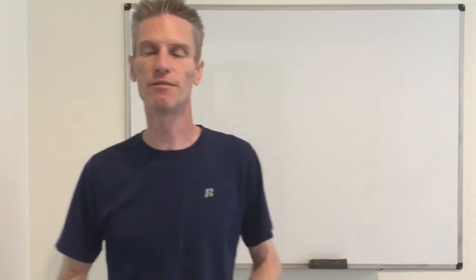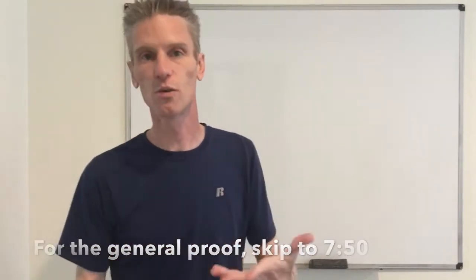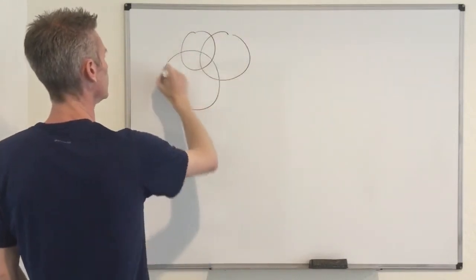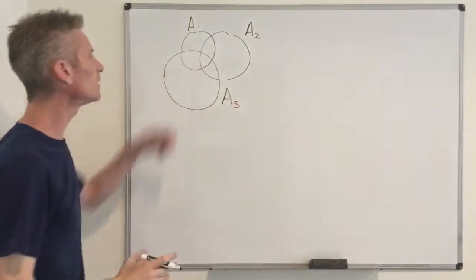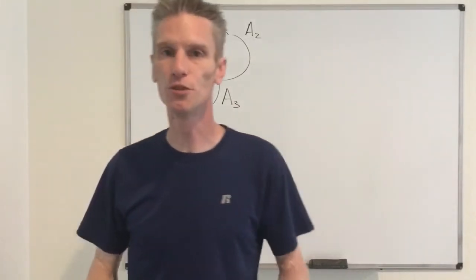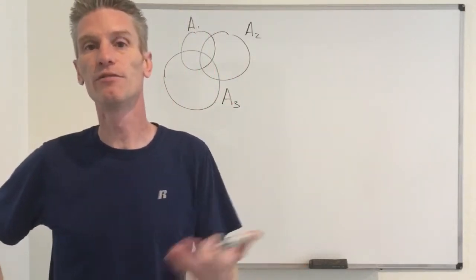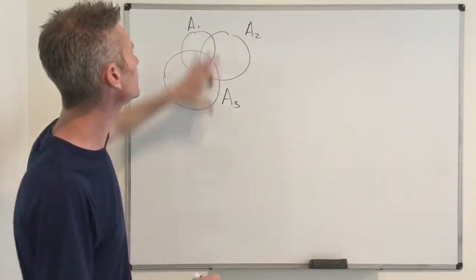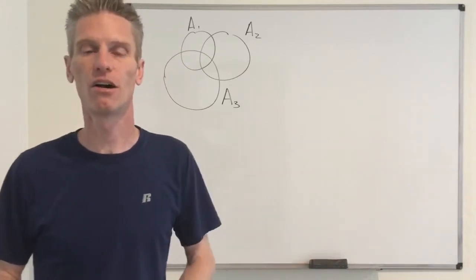Before I prove this formula in the general case, I'm going to show you how this works if we only look at three events, so that you get the intuition behind the formula. So let's assume we have three events — A1, A2, and A3 — and let's look at the probability of their union. I'm not going to prove anything here, but I'll show you the intuition so you have some idea of why the inclusion-exclusion identity is indeed true.